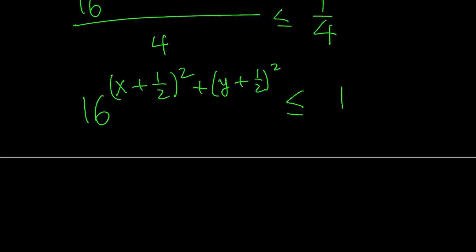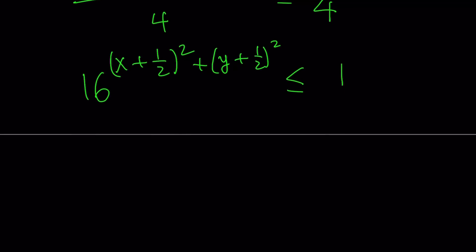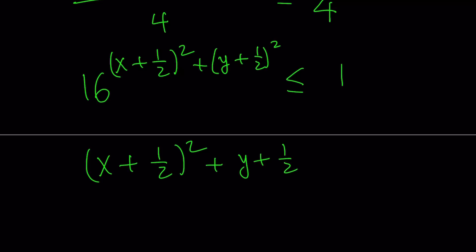So, you want the exponent to be less than 0, obviously. If you get a positive exponent, the answer on the left-hand side is going to be greater than 1, obviously, right? Think about it. So, this involves, after logging both sides, you're going to get the following: x plus 1 half squared plus y plus 1 half squared is less than or equal to 0.